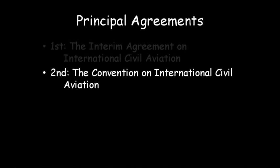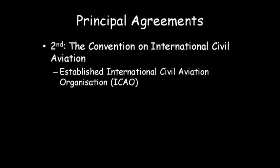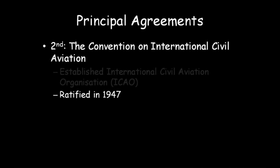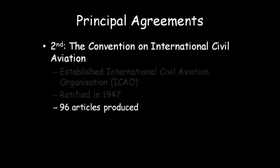The second principal agreement was the Convention on International Civil Aviation. This agreement established the International Civil Aviation Organization. It ratified the convention in April 1947, which drew a close to the Provisional International Civil Aviation Organization. It produced 96 articles including the privileges and restrictions of all contracting states, and provided the implementation of international standards and recommended practices to regulate international air transport.